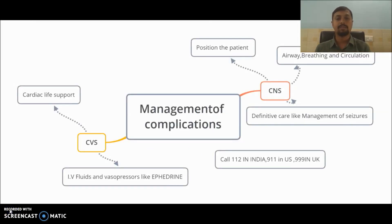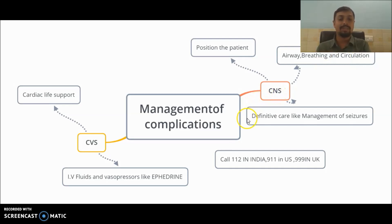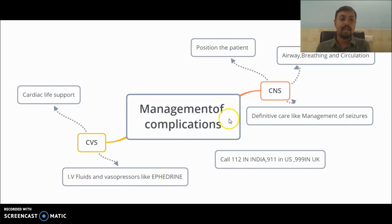To manage systemic complications related to CNS and CVS, the first thing to do is P-A-B-C: note the position of the patient, then assess airway, breathing, and circulation, and after that go for definitive care management. In case of CVS complications, go for cardiac life support along with IV fluids and vasopressors like ephedrine. In case of CNS complications, go for definitive care management of seizures.